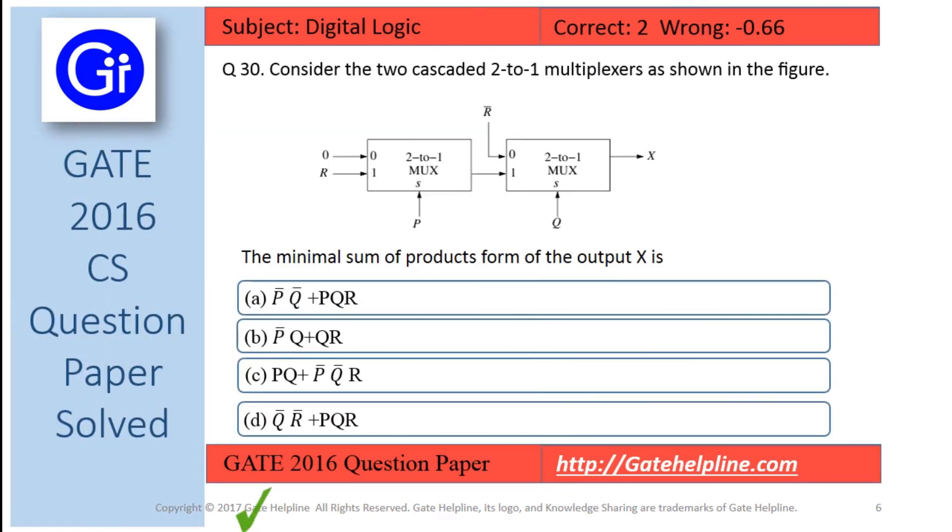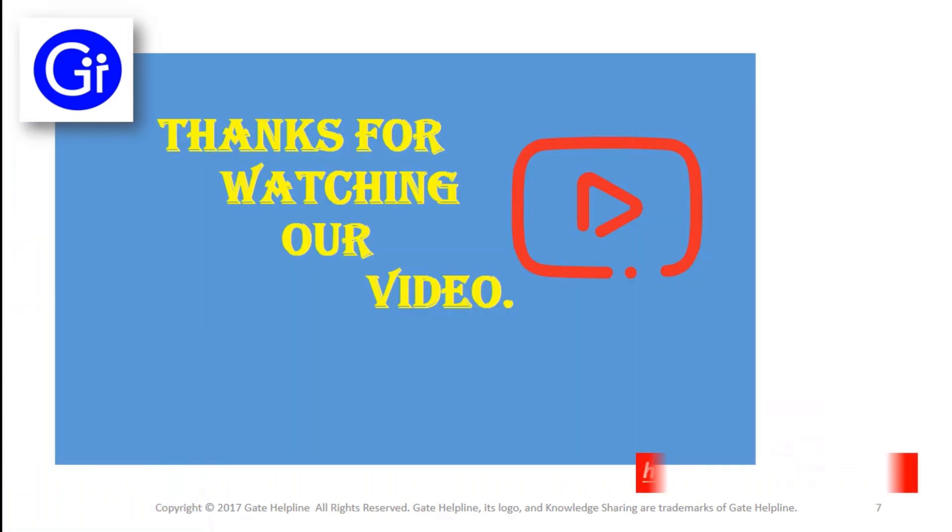So friends, as per our discussion, answer to this question is option D. That is Q bar, R bar plus PQR is the answer as the minimal sum of products form of the output X.